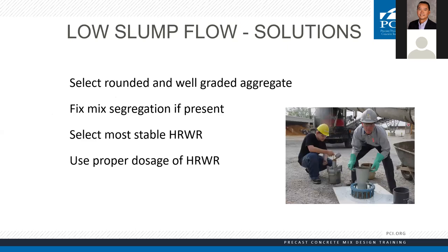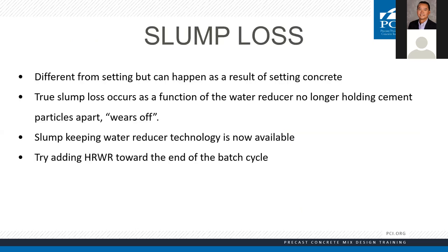Solutions for low slump flow: select rounded or cubical, well-graded aggregate. Fix the segregation problem. Select the most stable high-range water reducer and use proper dosing. What about slump loss? Maybe we batch at a 26-inch flow and 15 to 20 minutes later we've lost that flow. This is different from rapid setting — slump loss is mostly when the chemical wears off or when batch water is absorbed out of the concrete from dry aggregate. If we're losing slump because the chemical is wearing off, slump keepers, slump extenders, or a high-range water reducer designed to work in that environment and hold slump longer would be the solution.